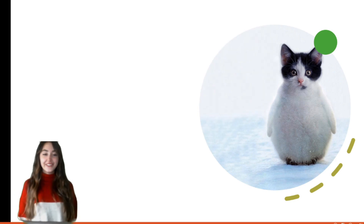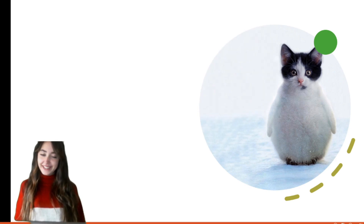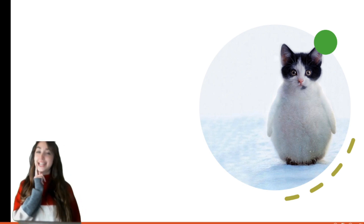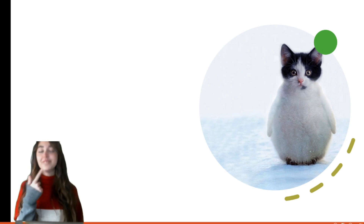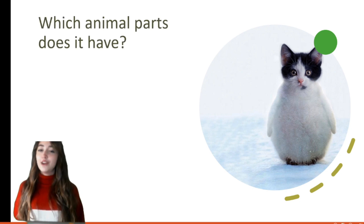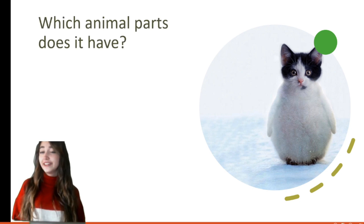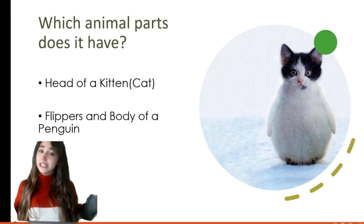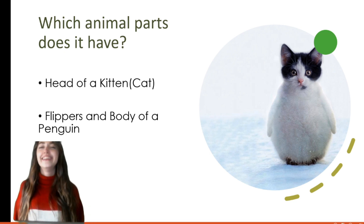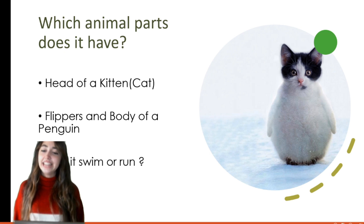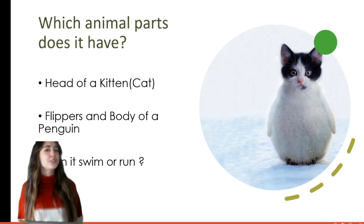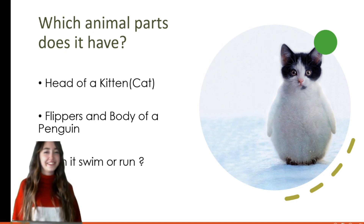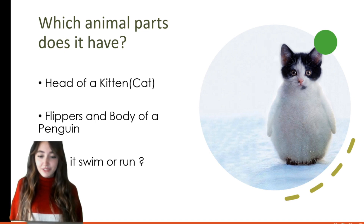Look, we have a cute animal again! Which two animals are mixed up in the picture? Yes — a cat and a penguin! Which animal parts does it have? It has the head of a kitten and the flippers and body of a penguin. Can it swim or run? I think it cannot swim, but I think it can run — but we cannot know that.